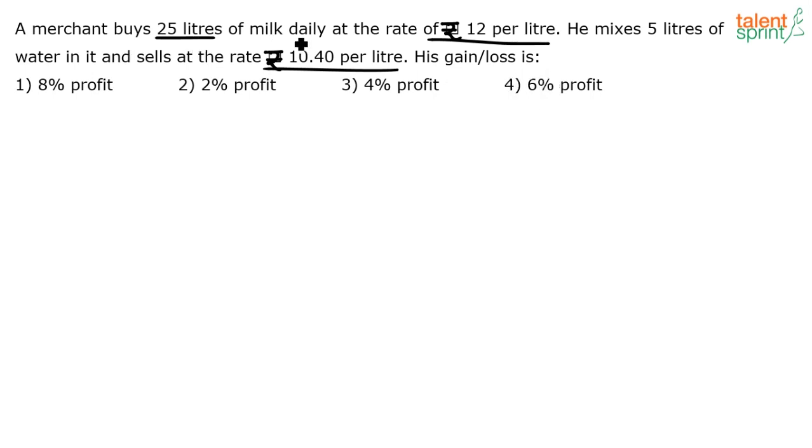He buys 25 liters of milk daily at the rate of ₹12 per liter. So what is the cost price of milk? He has bought 25 liters at ₹12 per liter, so 25 × 12. How much is that? ₹300.